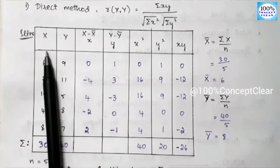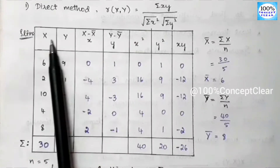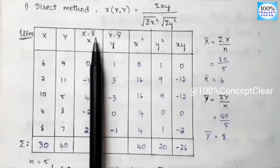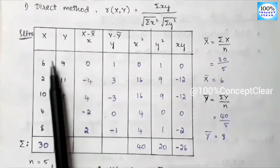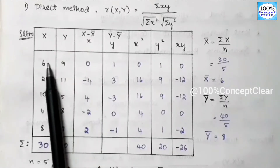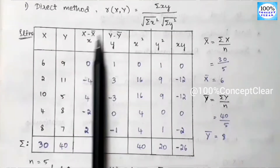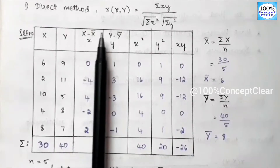In the first method, what do we do? This value is x-bar. So we have x-bar.